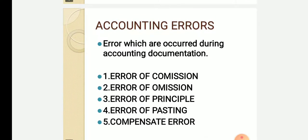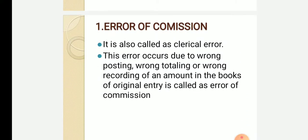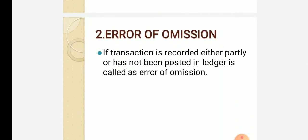Accounting errors — errors which occur during accounting documentation are called accounting errors. Error of commission means it is due to clerical error: wrong posting, wrong entry, wrong recording of amounts. Error of omission — omission means to omit or remove. Either you partly record the entry or don't record it at all. That error is called error of omission.